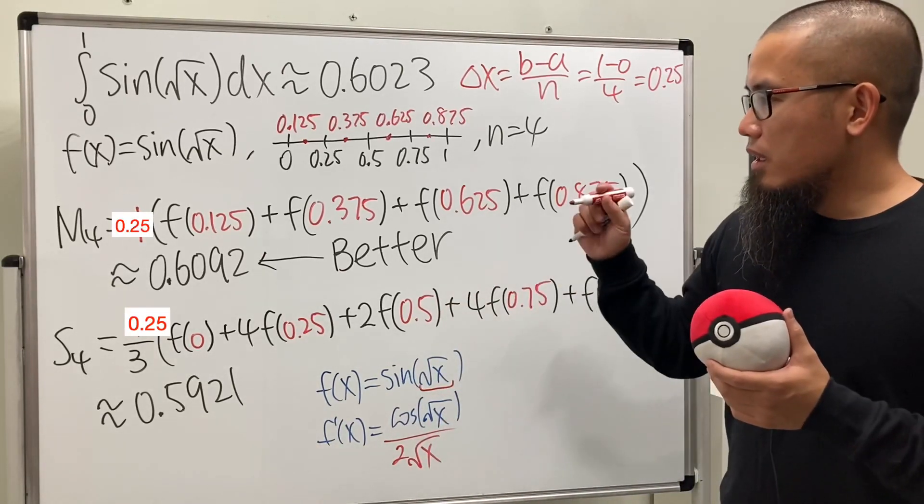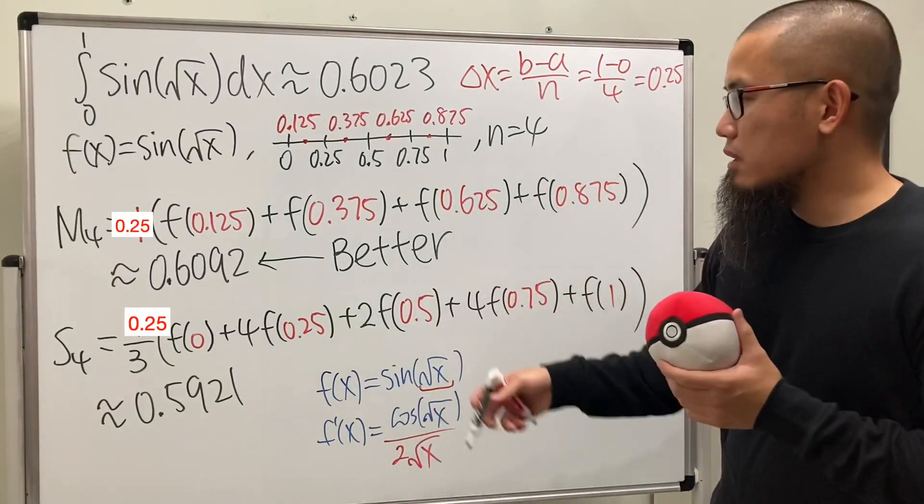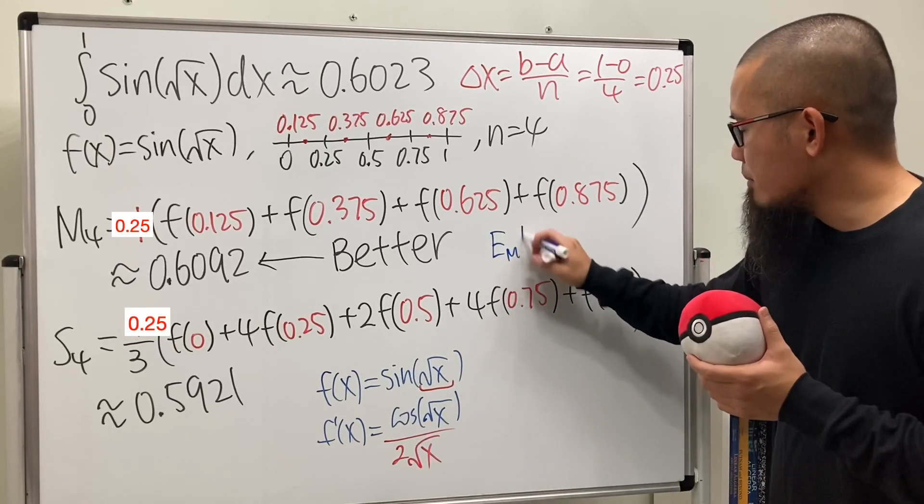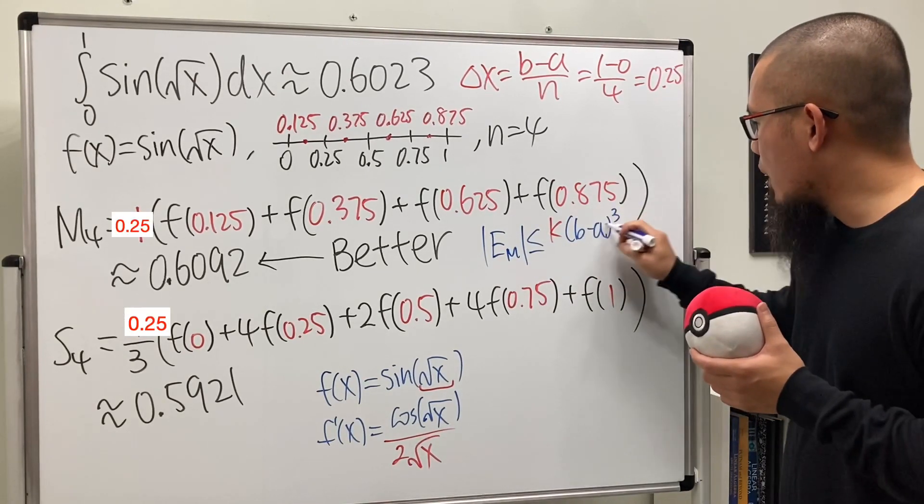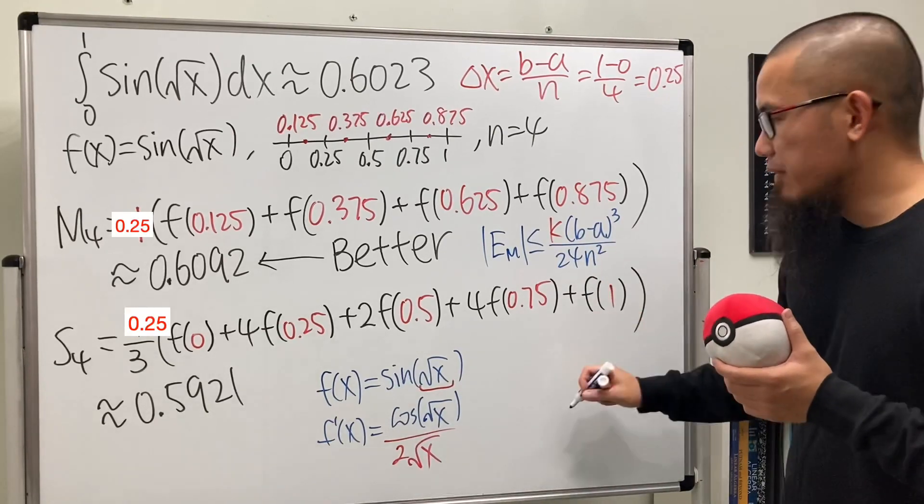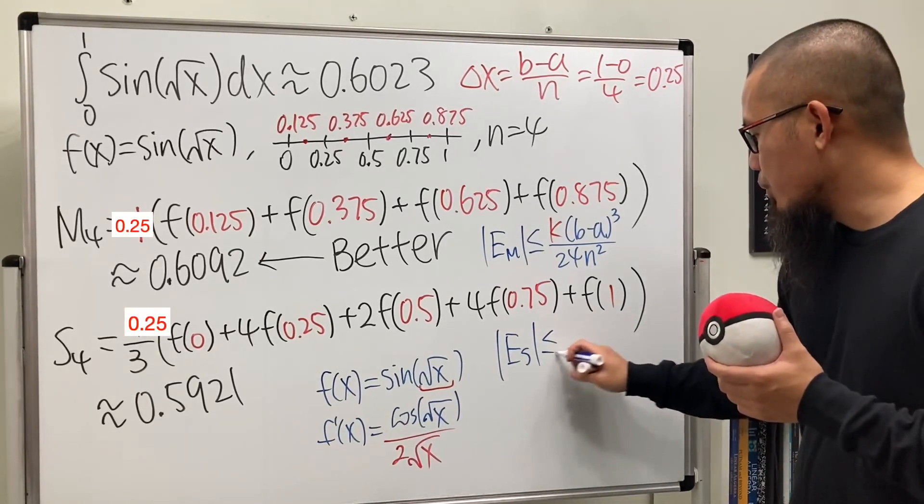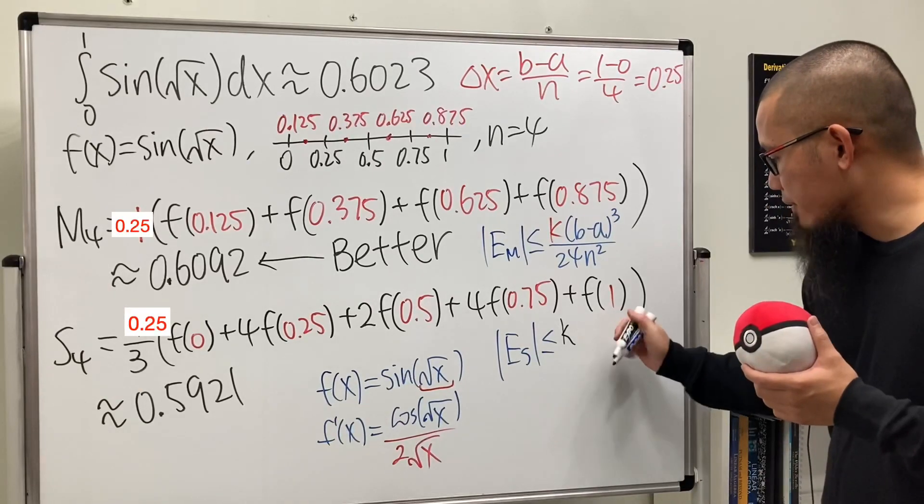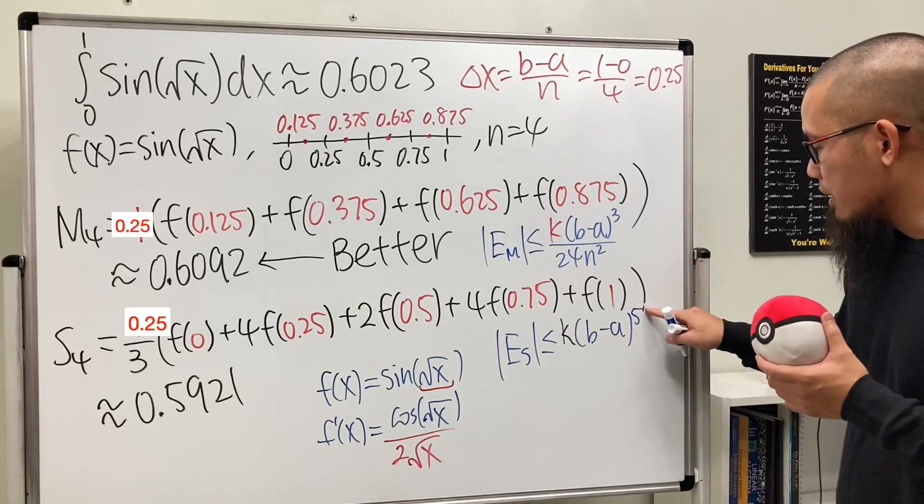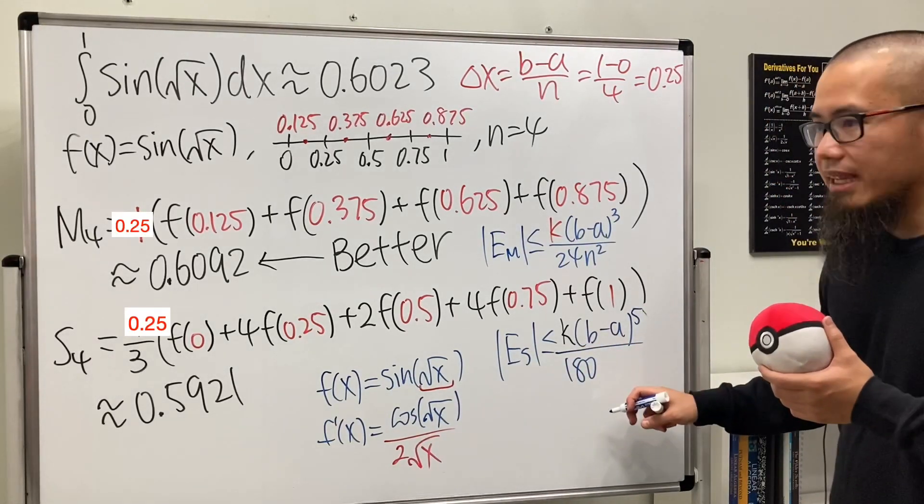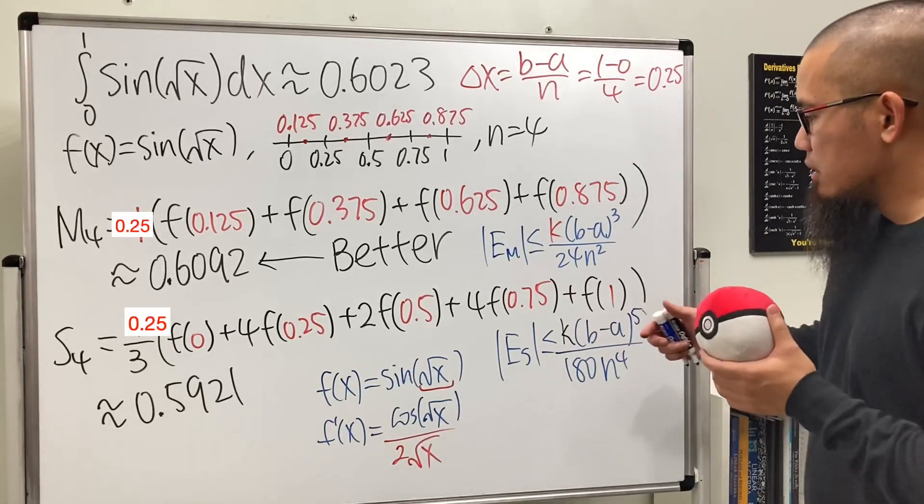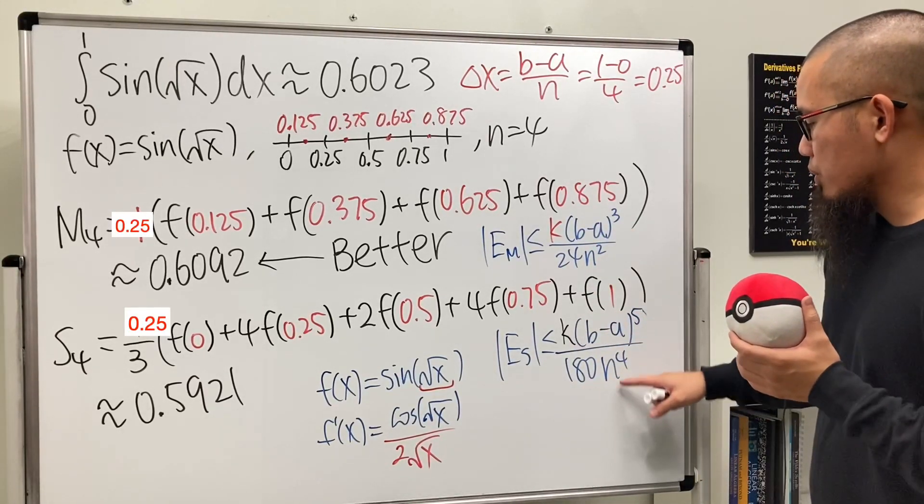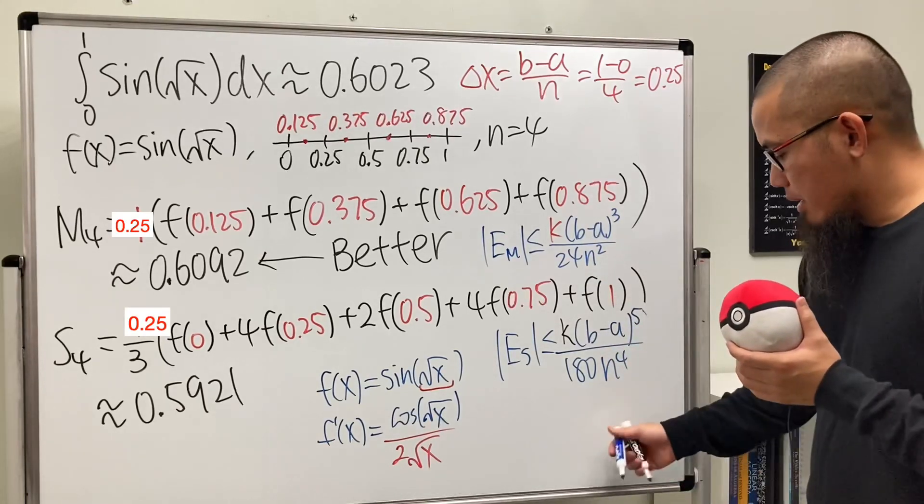If the first derivative doesn't exist, don't even think about the others. Remember, the error-bound formulas are all about derivatives. For the error-bound formula, E_M is less than or equal to K times b minus a to the third power over 24n squared. But if you look at E_S for Simpson's rule, this is less than or equal to K times b minus a to the fifth power over 180n to the fourth. You can see if n is a decent size, usually this will be much smaller, especially with 180 and n to the fourth power on the bottom.